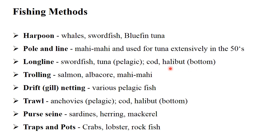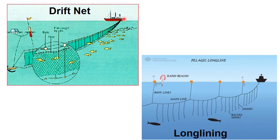Trawl net is one of the most devastating techniques for fishery resources — fish are depleted and the habitat, the home of the fish, is also depleted. Trawl net is used to catch anchovies, cod, and halibut. Purse seine is used to catch sardines, herring, and mackerel. Traps and pots are used to catch crabs, lobsters, and rockfish. Looking at the diagrams: drift net is a net anchored from a boat, floating at pelagic or bottom depth to catch fish. Longline is a long chain of hook lines.